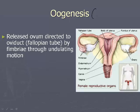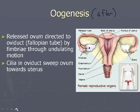After oogenesis occurs and the ovum has been released from the ovary, it's directed into the fallopian tube — which we also call the oviduct — by feather-like protrusions called fimbriae. They make a wave-like, undulating motion that assists the egg toward the fallopian tube. Once inside the oviduct, cilia — those tiny micro-hairs — do a sweeping motion that propels the ovum toward the uterus.